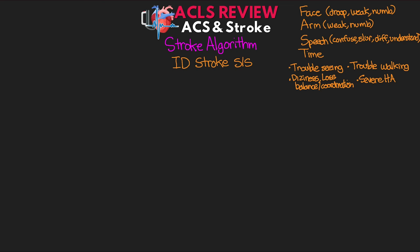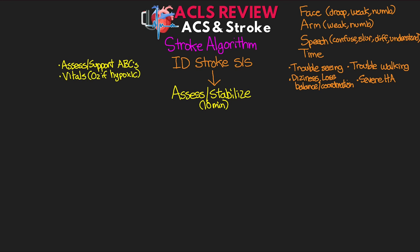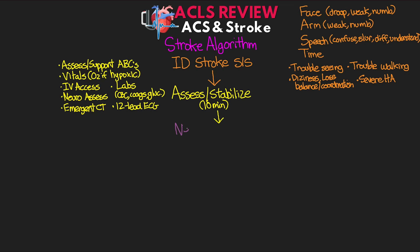The next step involves assessment and stabilization of the patient, and all of this should occur within 10 minutes. We want to assess and support ABCs and vitals, give oxygen if hypoxic, ensure good working IV access, and draw labs — looking for CBC, coags, and glucose, treating glucose if needed. We also want to do a quick neurological assessment, order an emergency CT scan, and get a 12-lead ECG. From here, we want an immediate neurological assessment by the stroke team within 25 minutes.